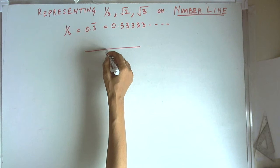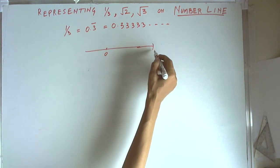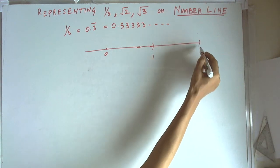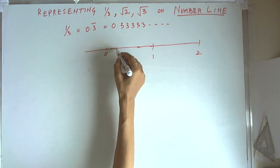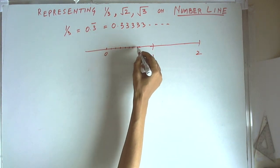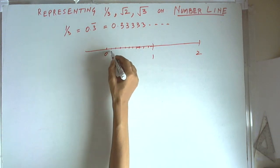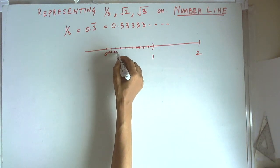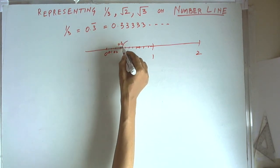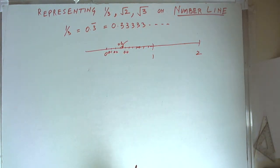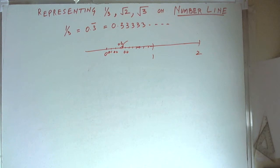If we represent 0 and 1 and 2 on the number line and divide this into 10 parts, then this is 0.1, 0.2, this is 0.3, and this is 0.4. So 1/3 will lie somewhere here — approximately we can put the value, but we cannot put it exactly. But by geometrical construction, we can represent the number on the number line.